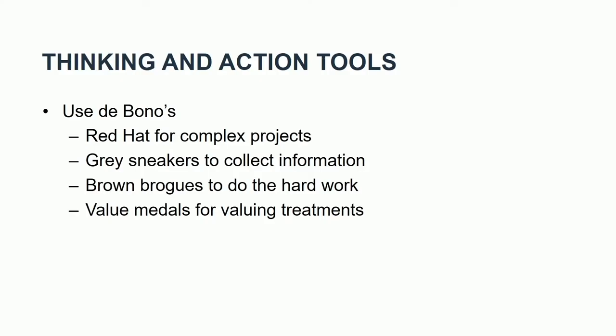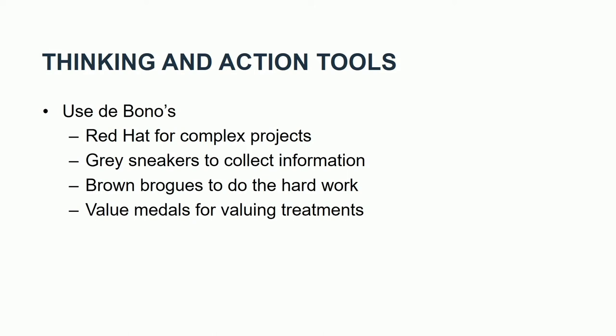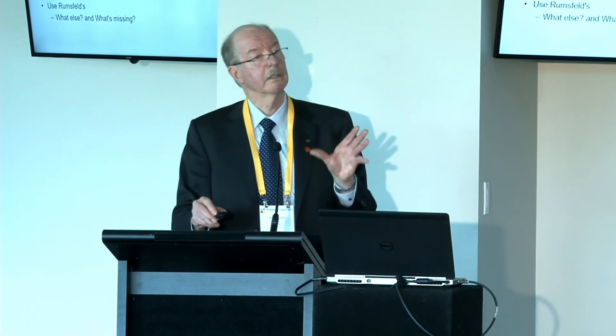For De Bono's thinking tools: the red hat is for emotions — you're allowed to say, 'I think the project manager's a poor leader.' It creates laughs and can generate good ideas. The grey sneakers mean sniff around and get the information. The brown brogues mean roll up your sleeves and do the hard work. The value medals are a very good way for assessing treatment solutions — you can assess in a plus-three to minus-three rating for things like profit, people, and environment. Rumsfeld is famous for asking 'what else?' and 'what's missing?' — he says only 4% of people can tell you what's missing, which separates good risk thinkers.